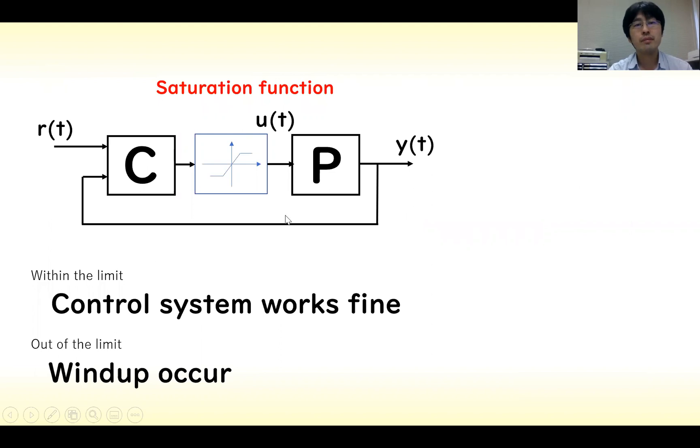This is a control system. P is the plant and C is the controller. When the input limit exists in this control system, a saturation function is used.